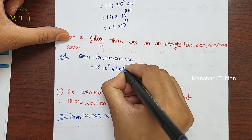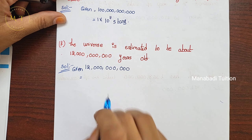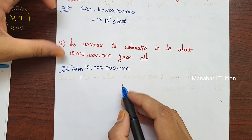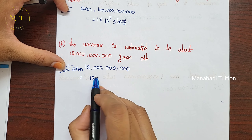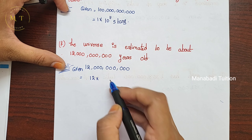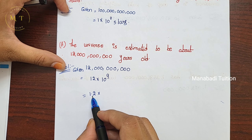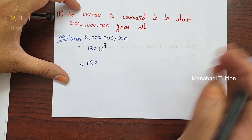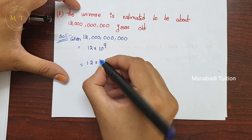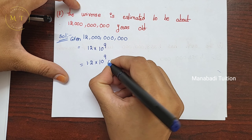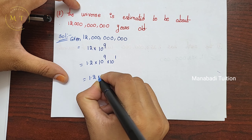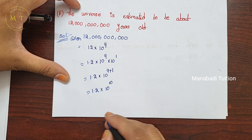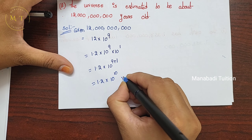Next, part E — the universe is estimated to be about a certain number of years old. Write the number: 12 into 10 power. Count the zeros — there are 9. After 1 digit, place the point. The point moved 1 digit before, so write 10 power 1. Add exponents: 9 plus 1 equals 10. So the answer is 1.2 into 10 power 10 years old.